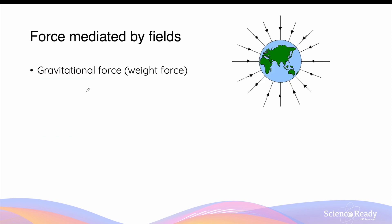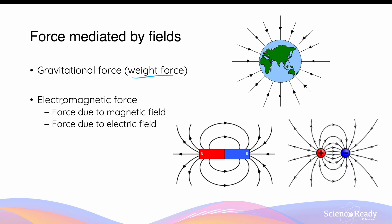Let's talk briefly about forces mediated by fields. Most commonly we have the gravitational force, which is more simply known as a weight force. This force is caused by an object and the gravitational field produced by another object. There is also the electromagnetic force, which is further divided into a force due to the magnetic field and a force due to the electric field. We'll discuss the concept of electromagnetic forces in their own videos later in the course in module 4.